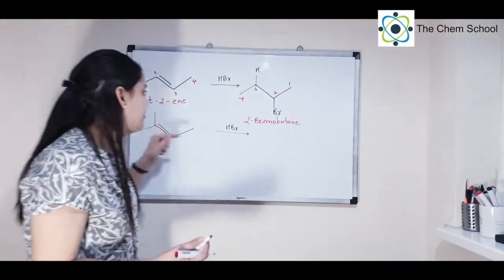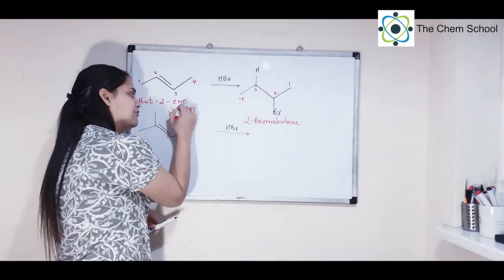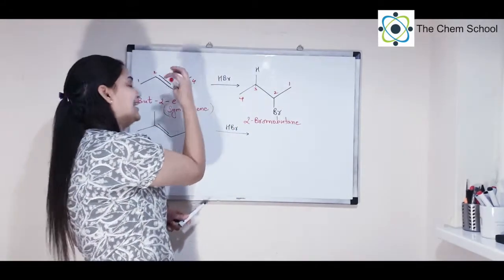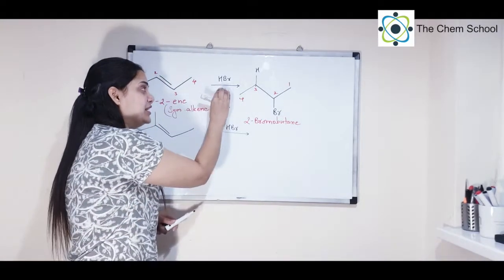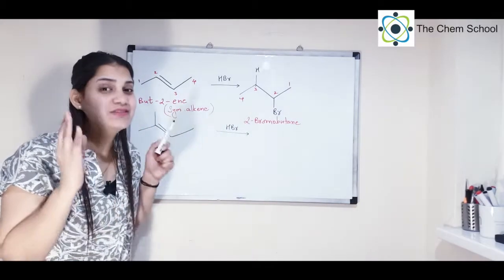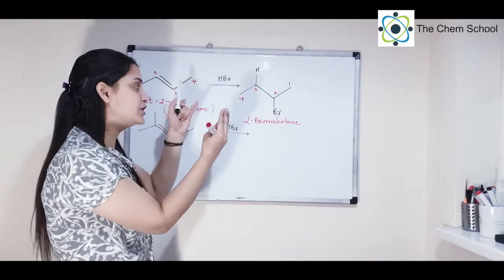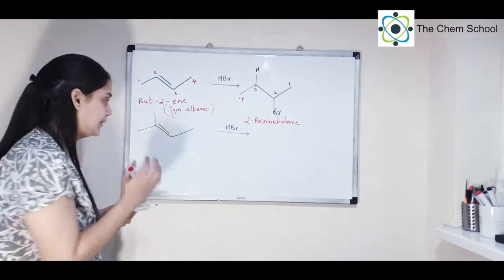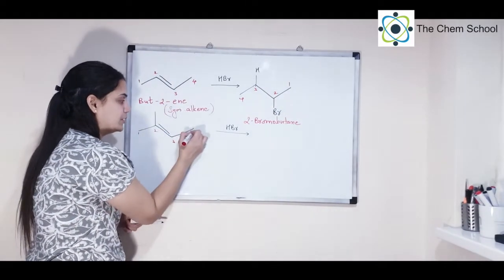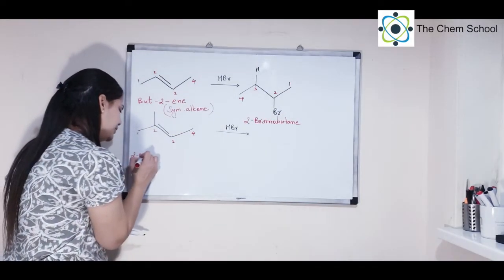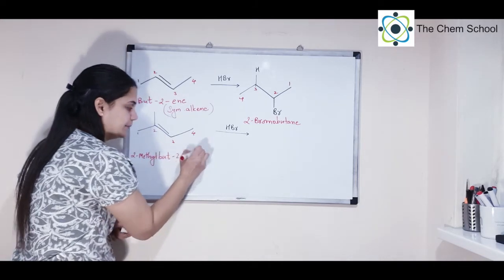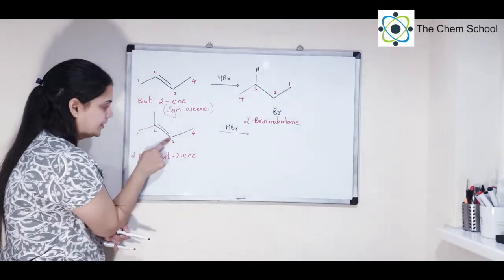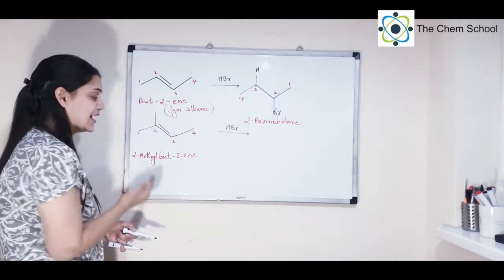Even if your reagent — the thing getting added across the alkene — is symmetrical, you will get only one product. But now there's a problem: have a look at the second example. The alkene is not symmetrical, it is an asymmetrical alkene. It is one, two, three, four carbons with a methyl substituent on the second carbon — 2-methylbut-1-ene. Across the double bond, one side has two methyl substituents and the other has only one methyl and one H. This is an asymmetrical alkene.